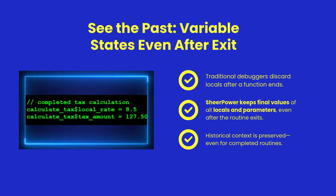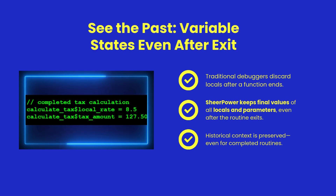Most debuggers lose all trace of a routine's local variables once it exits. But ShearPower retains those final values, letting you trace decisions and calculations made earlier in the call chain. This gives you deep historical context when debugging complex business logic.